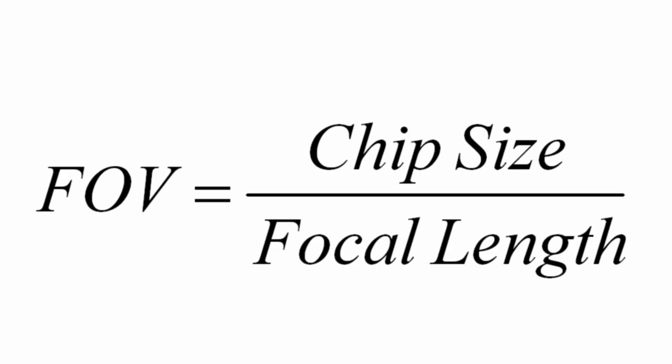Fortunately, the formula for the field of view is really easy to remember. It is the chip size divided by the focal length of your telescope. This gives the field of view in radians. Later I will show you how to convert to degrees, arc minutes, or arc seconds.